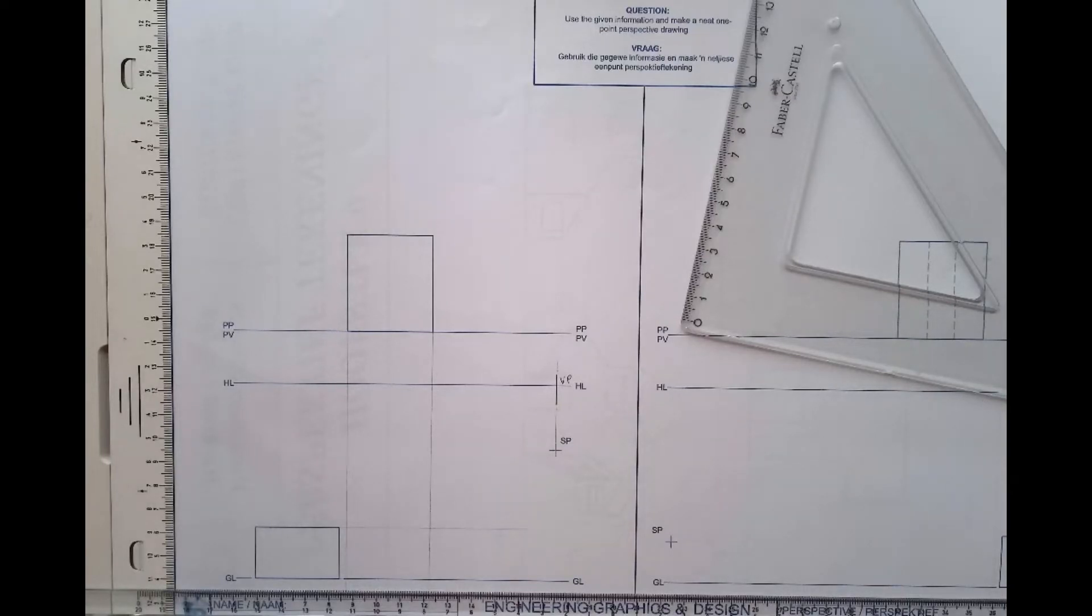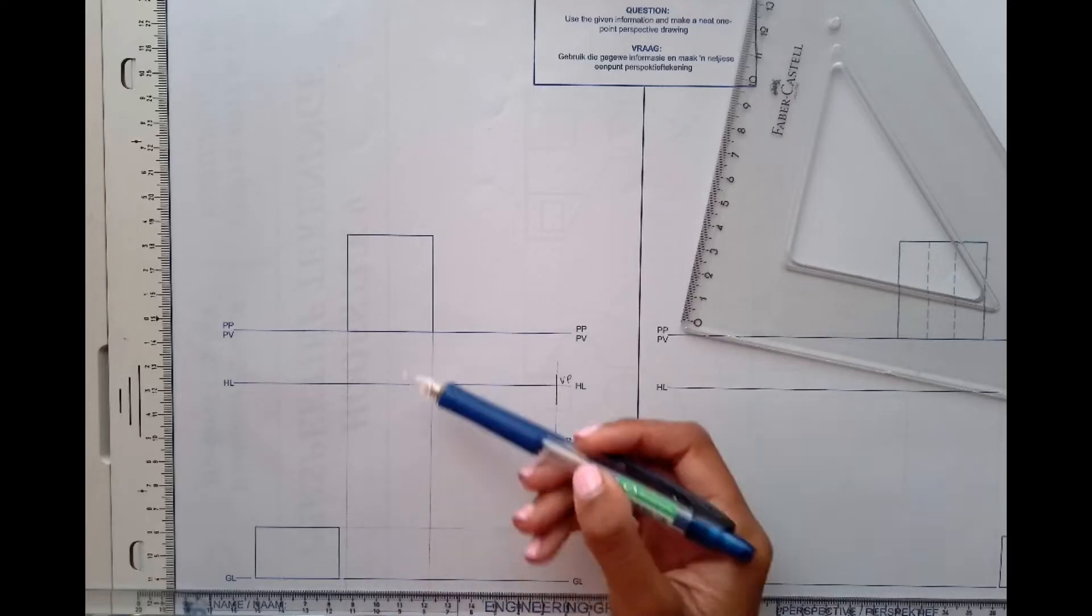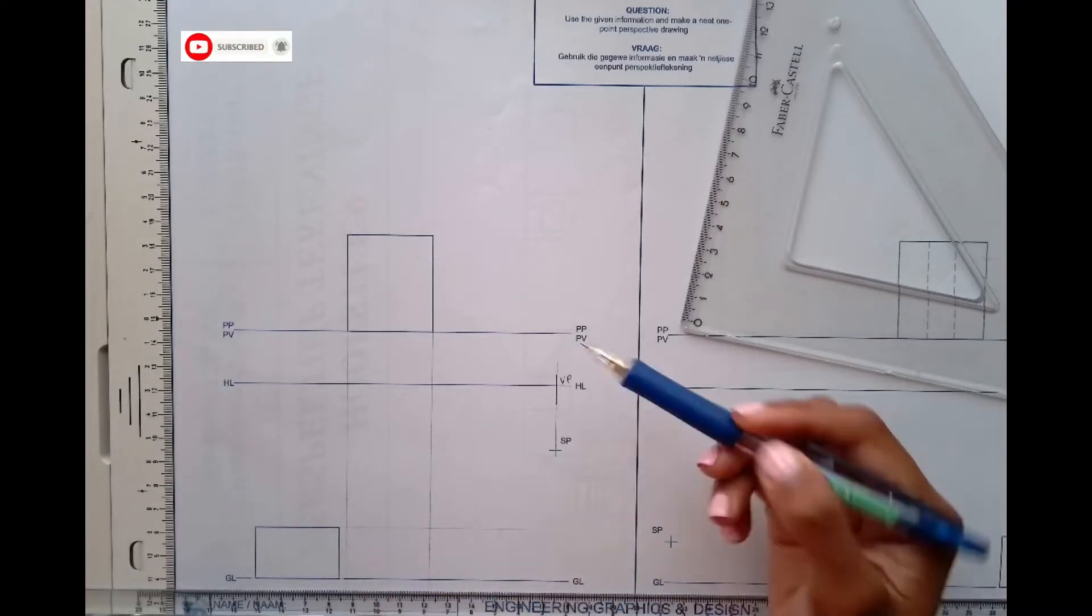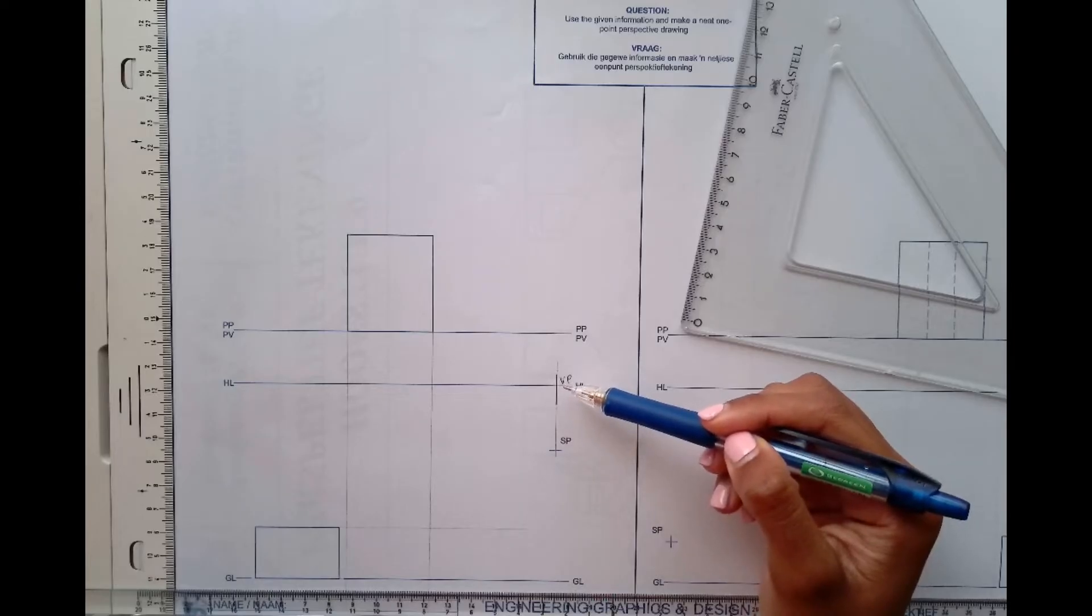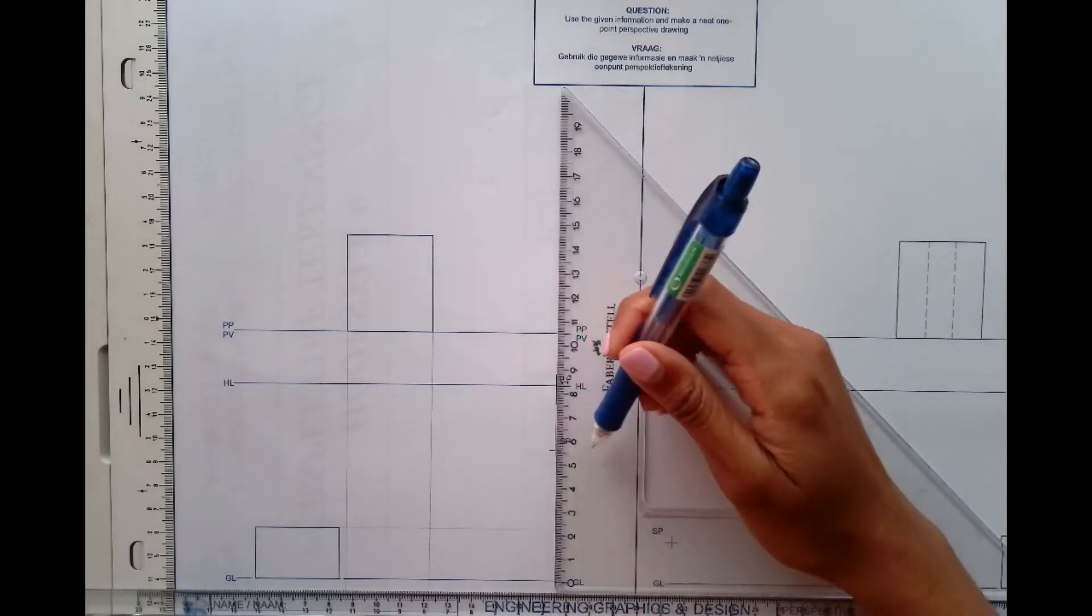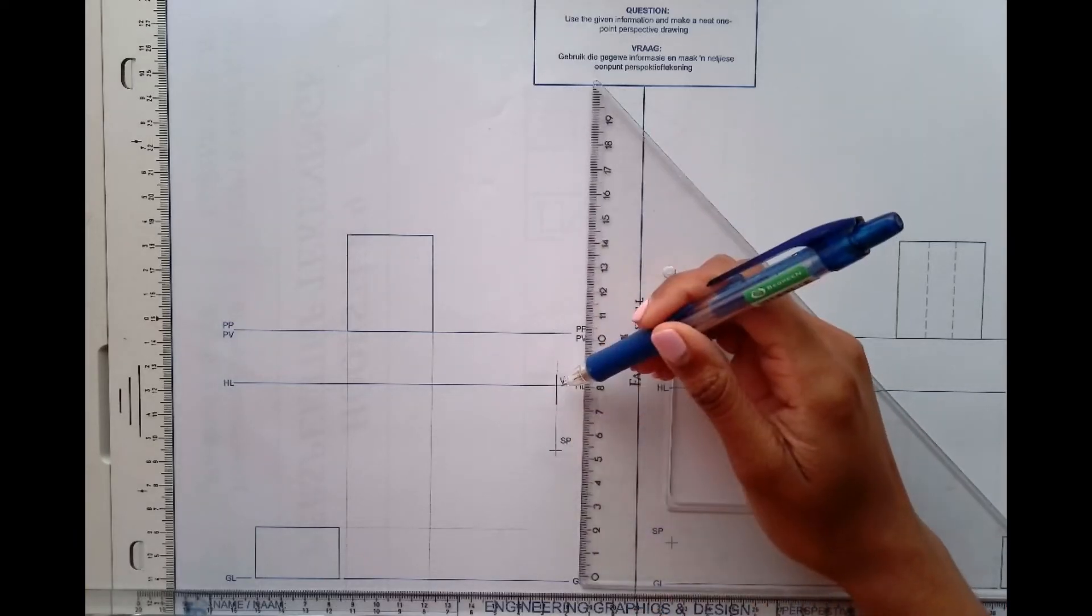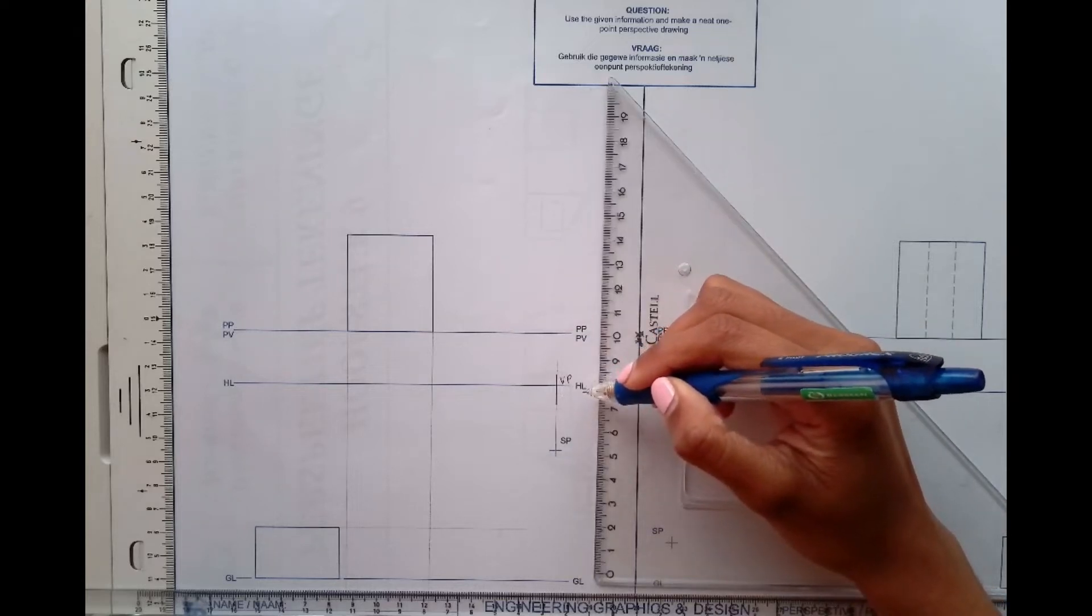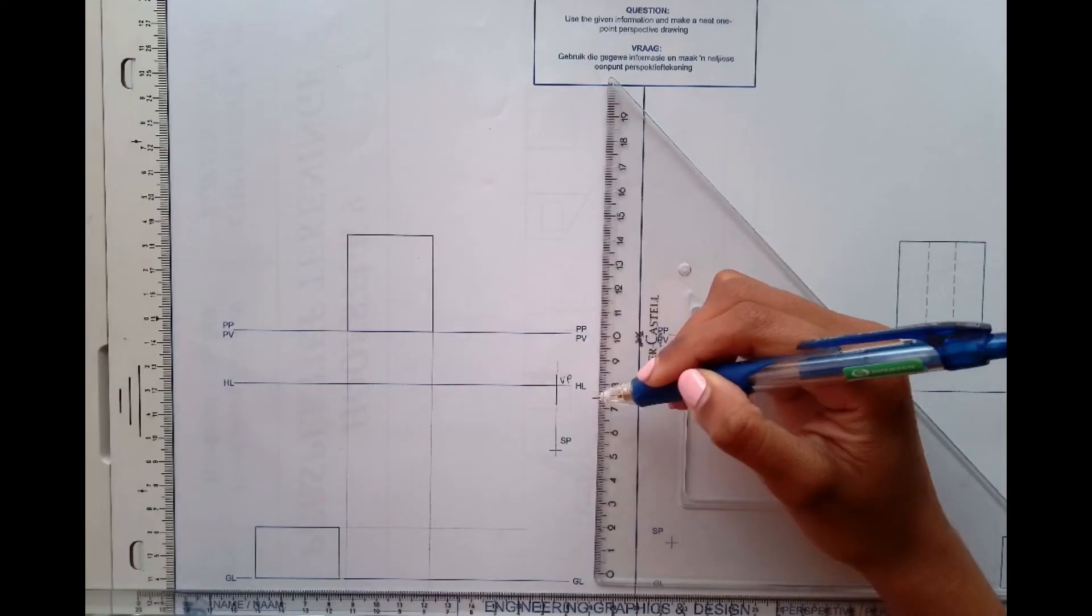Hi, welcome to another video where we will be drawing perspective drawings. As you can see, I've copied this view here by projecting these two points down and then these two across horizontally. I have this point called the vanishing point. To get this point, I projected the SP line, which is the stationary point, up, and where it intersected this HL line, which is the horizon line, I got this point.